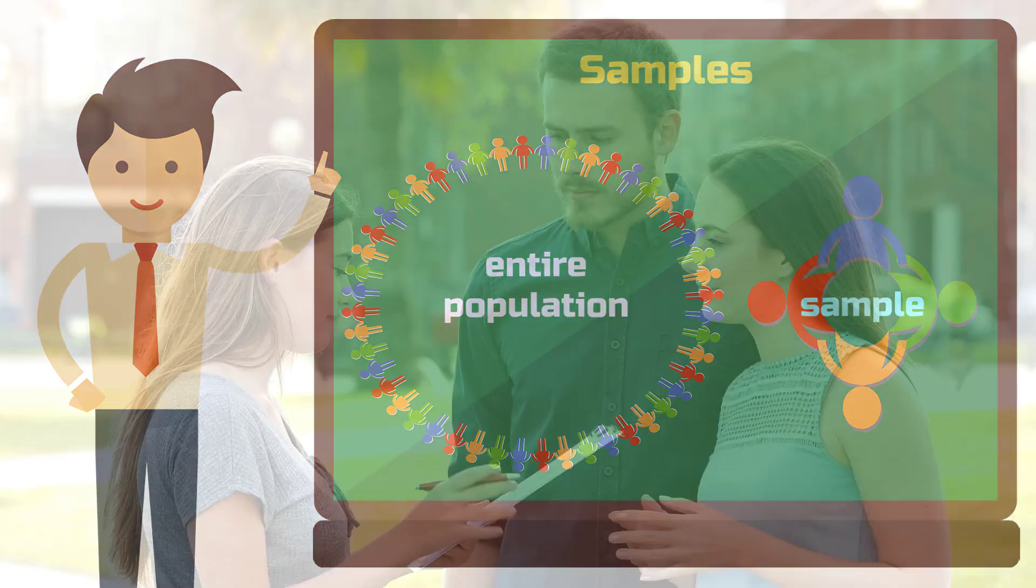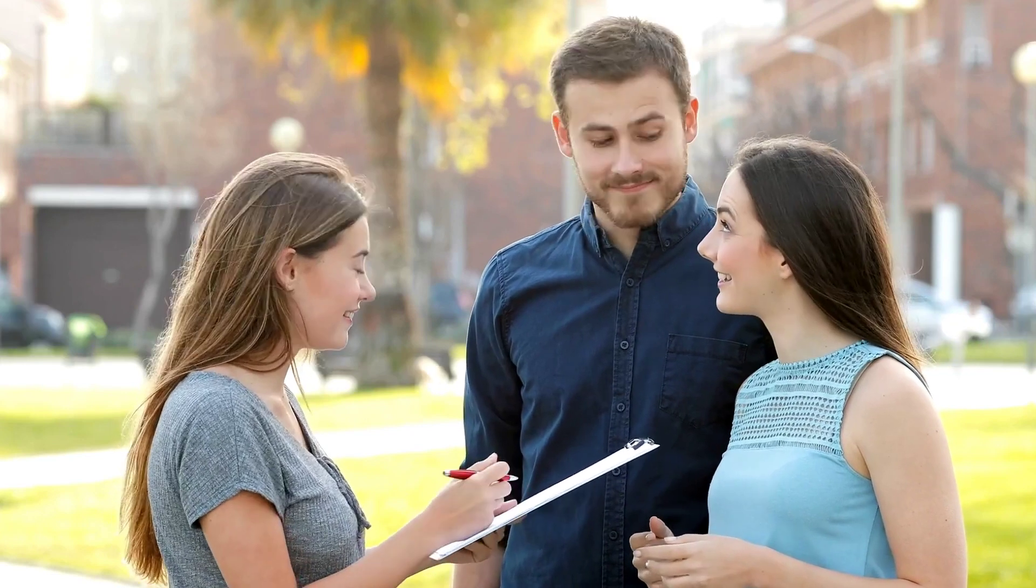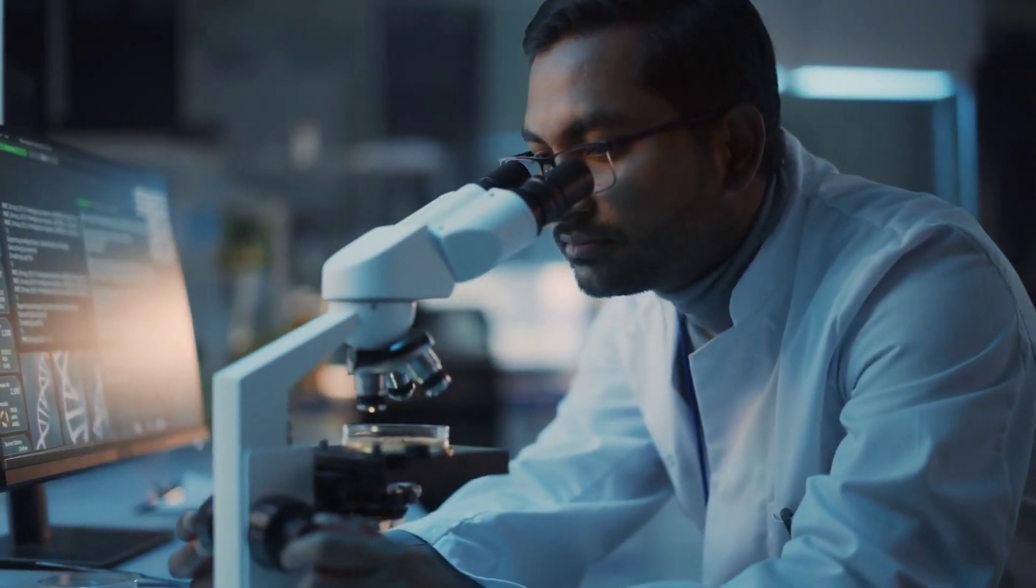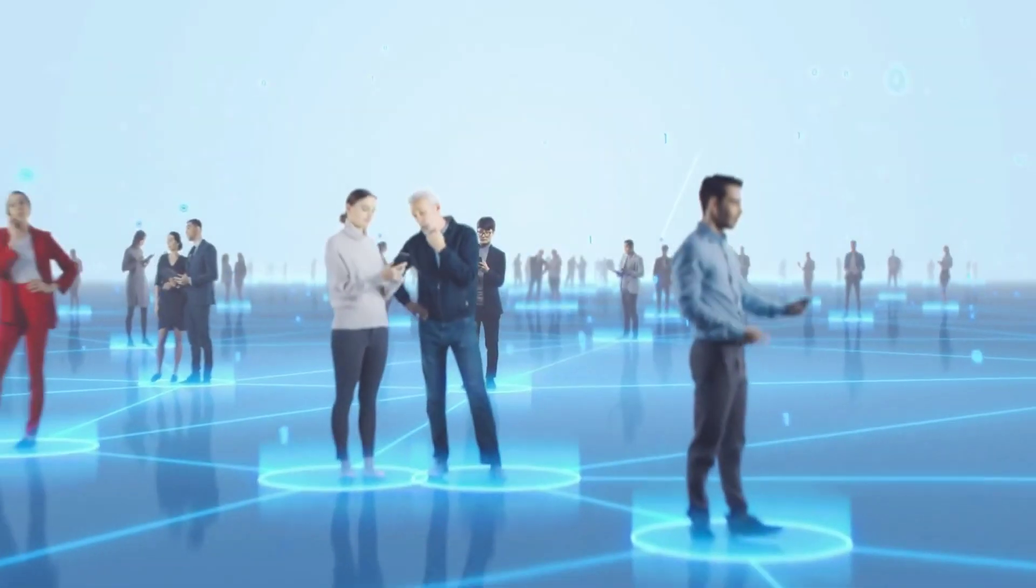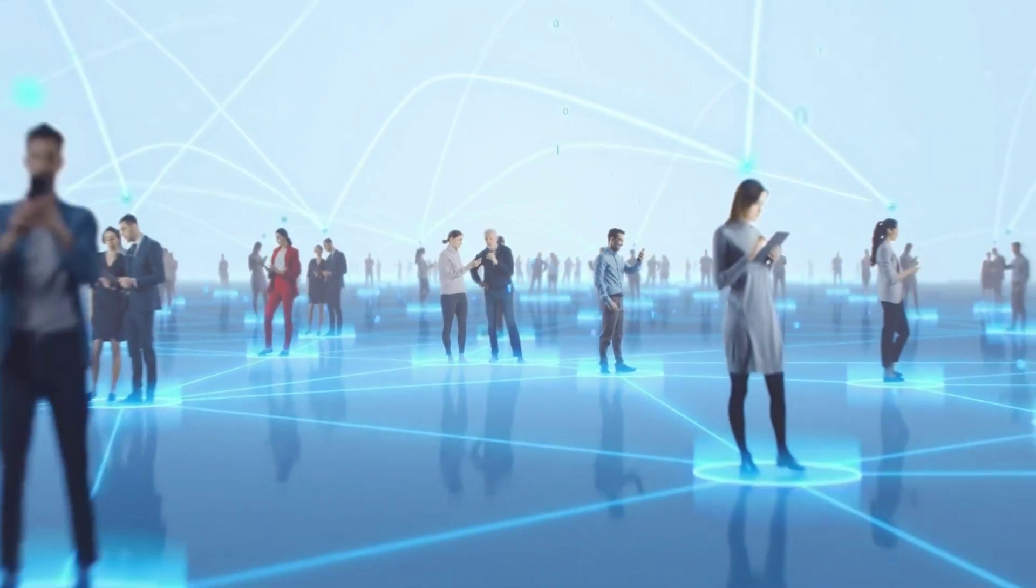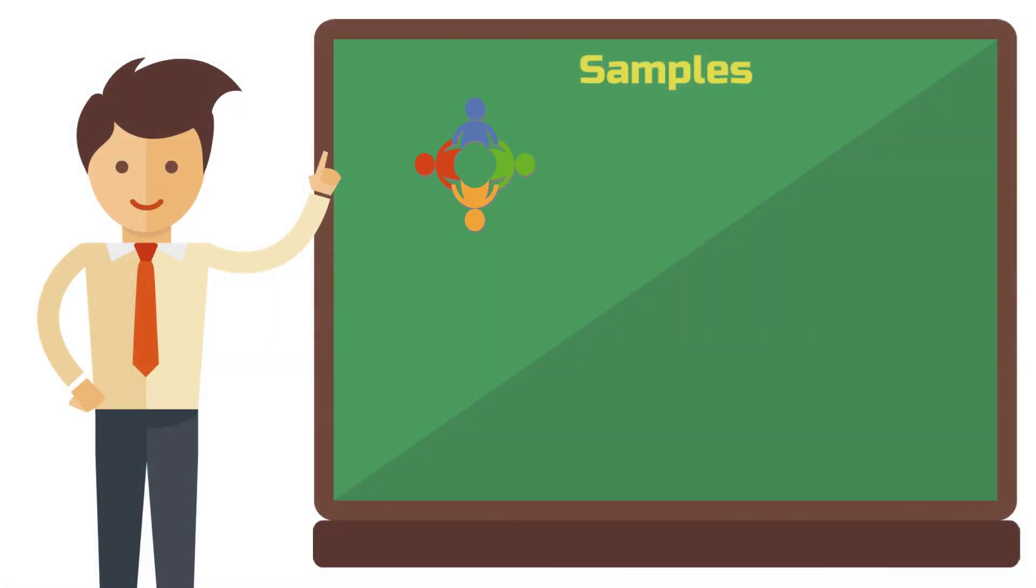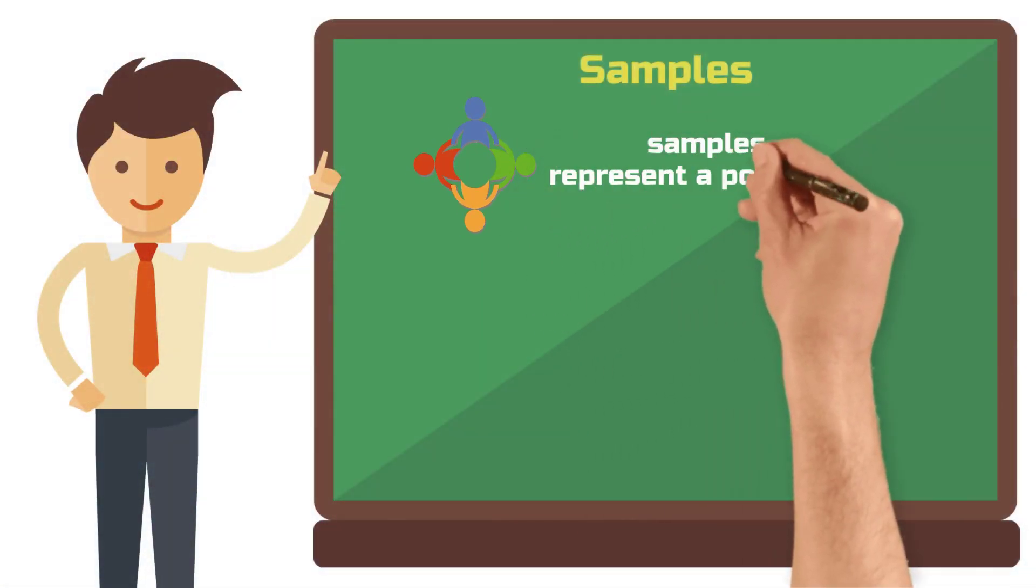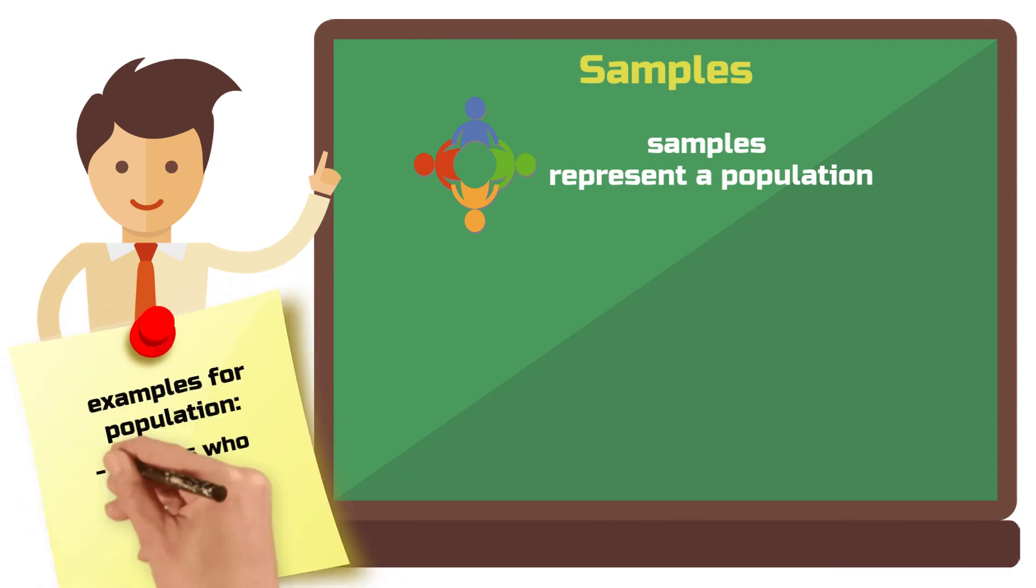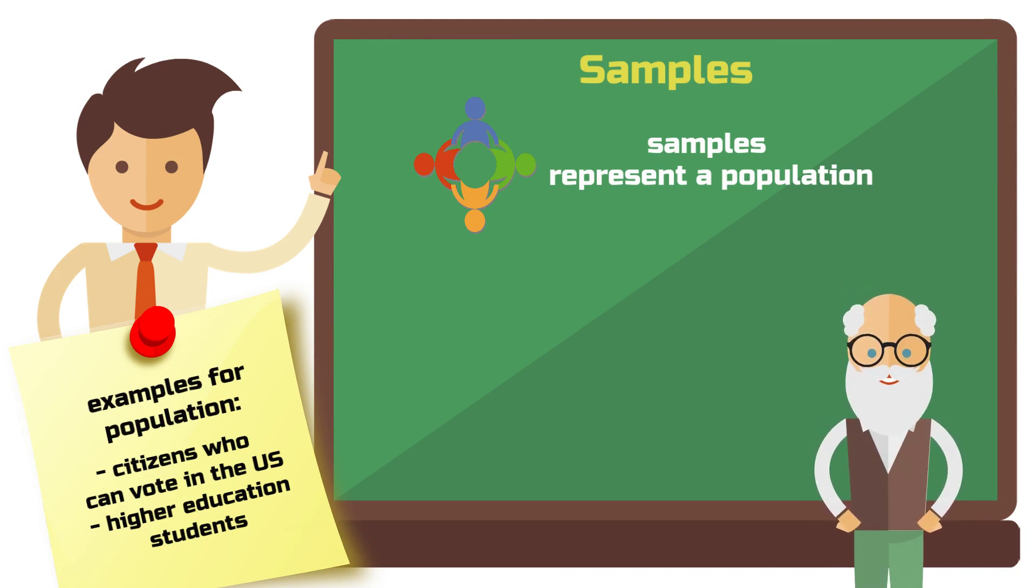But it is done with a sample from this population. For example, if you conduct a survey, maybe 200 people participate. In an experiment, it might be 60. Or perhaps you've collected data from social media or businesses involving 1000 or more subjects. These samples then always represent a population, such as all citizens who are allowed to vote in the US or all higher education students and so on. Researchers then aim to generalize the results of a survey or experiment with a small group from this population, that is the sample, to the whole population.